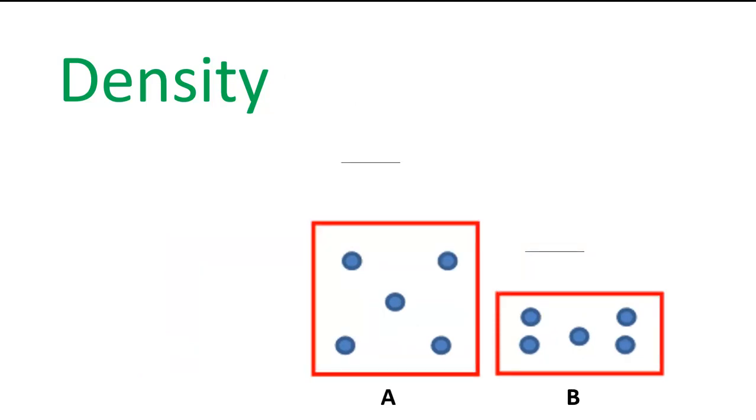Let's compare A and B. Can you see which has a higher density? Let's check if you're right. Which has more mass? They both have the same mass. Which has more volume? A has more volume. So which one is more dense? B. It's easy to see that B's particles are more squashed together.